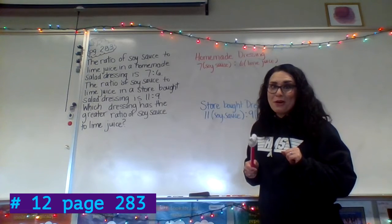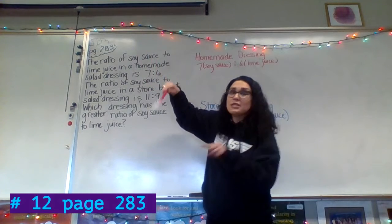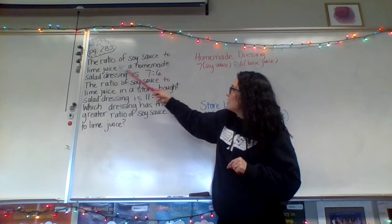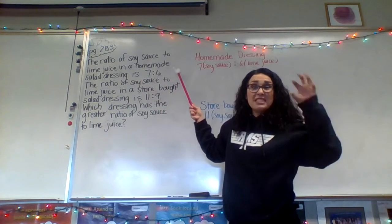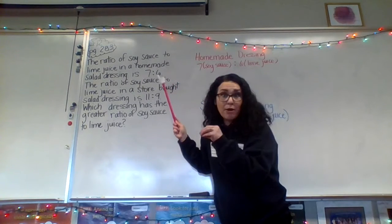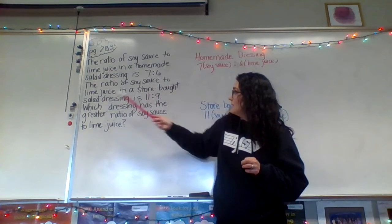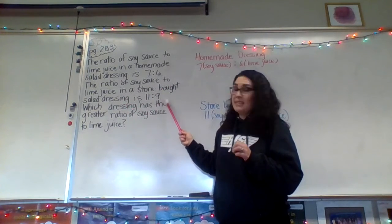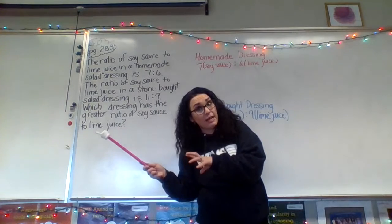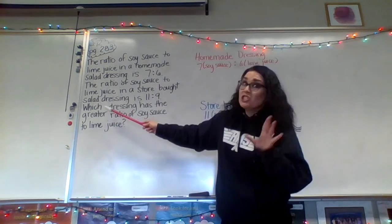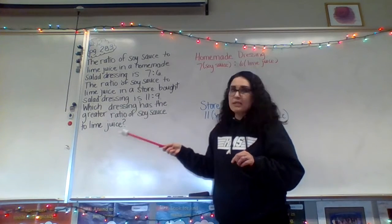The next problem is number 12 on page 283, all about salad dressing. It says the ratio of soy sauce to lime juice in a homemade salad dressing is seven to six — for every seven parts soy sauce, you have six parts lime juice. The ratio in a store-bought salad dressing is 11 to nine — every 11 parts soy sauce, nine parts lime juice. The question is: which dressing has the greater ratio of soy sauce to lime juice?